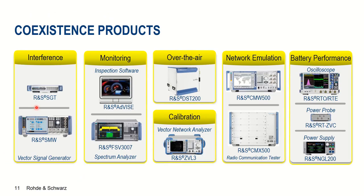Finally, the products we saw today include vector signal generators from Rohde & Schwarz, our inspection software, spectrum analyzer, shielded chambers — with the DST 200 recommended for smaller products up to 6 GHz — network analyzers, and the CMW500 for cellular and non-cellular network emulation. For 5G, we have the CMX500. For battery performance measurements, we have oscilloscopes, very sensitive power probes, and power supplies.